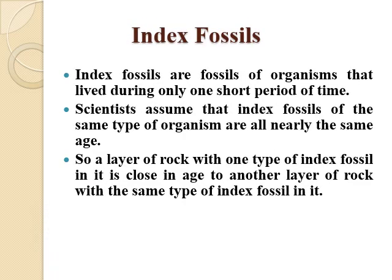Here are index fossils. Index fossils are the fossils of organisms that lived during only one short period of time and went extinct after that time period. Scientists assume that index fossils of the same type of organism are all nearly the same age. So a layer of rock with one type of index fossil in it is close in age to another layer of rock with the same type of index fossil in it.